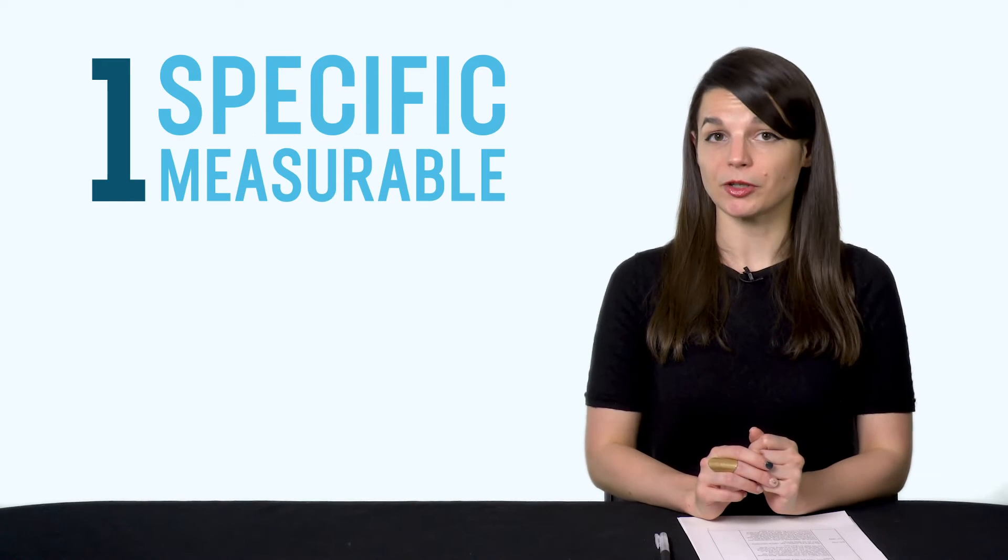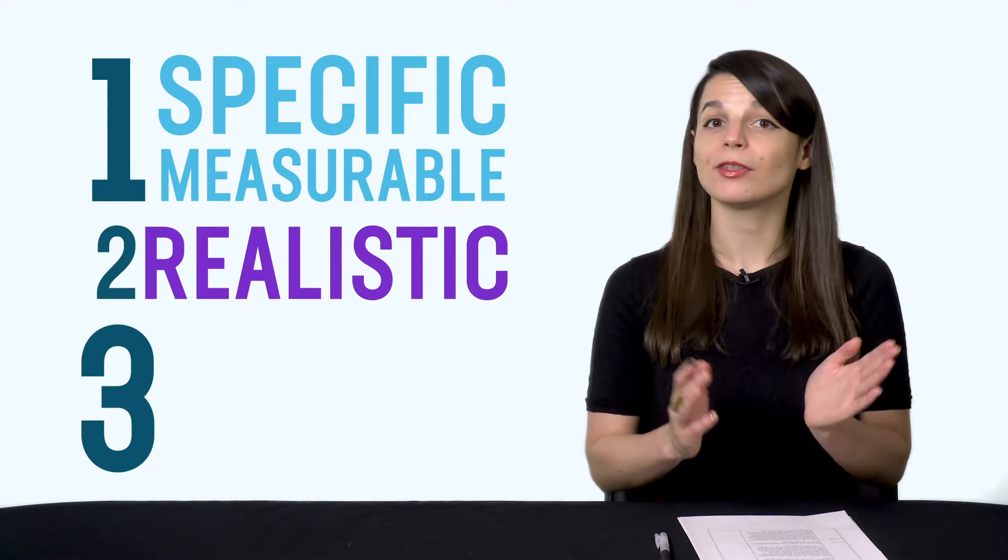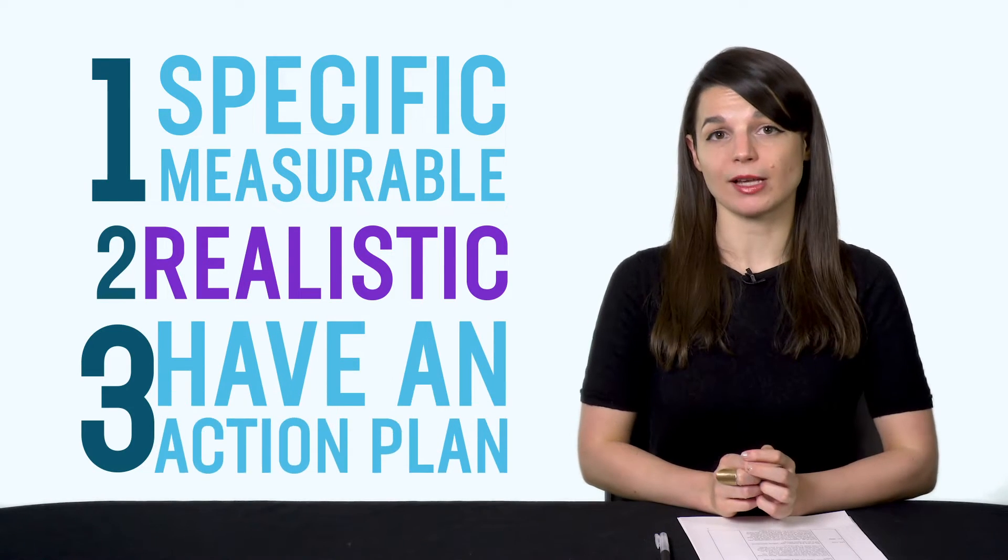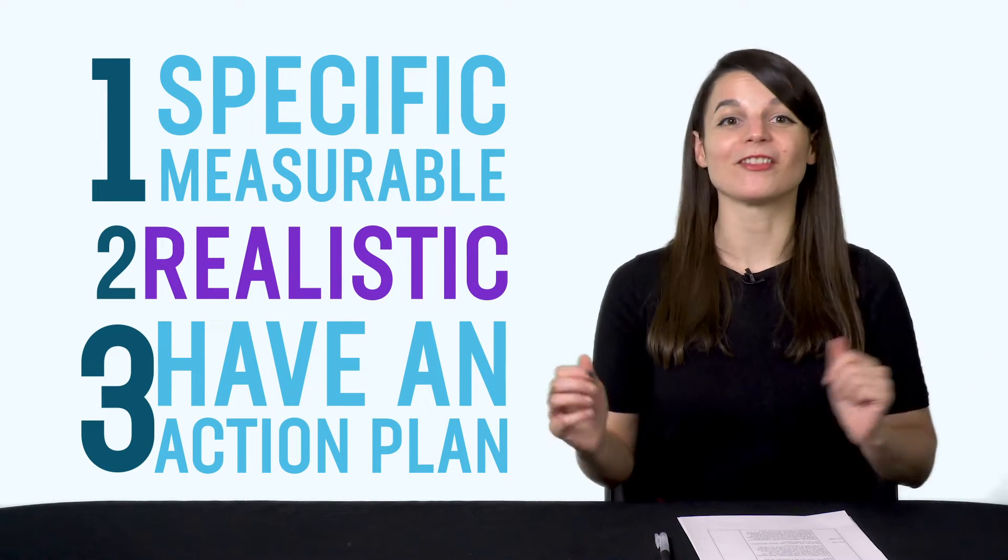Here are the three rules for successful goal setting. Remember, your goals must be one, specific and measurable, two, realistic, and three, they must have an action plan. Yes, the complete opposite of everything you heard earlier.